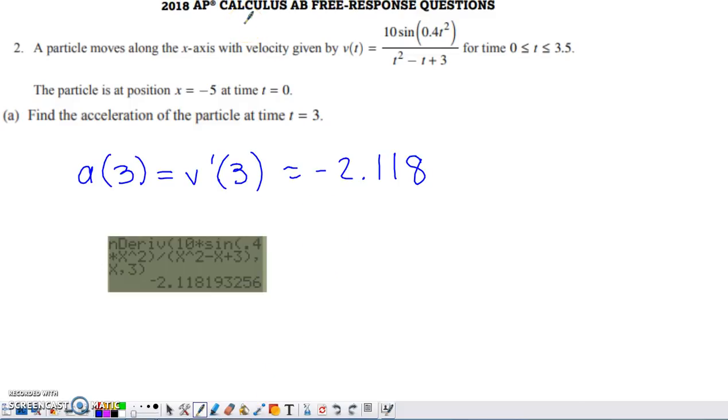Here's another 2018 free response question that appeared on the Calc AB and BC exams. It's a calculator question talking about a particle that moves along the x-axis, and we're given a velocity function for that particle. That velocity function holds on the interval 0 to 3.5, and then they provide us with the position of the particle, negative 5 on the x-axis at time 0.